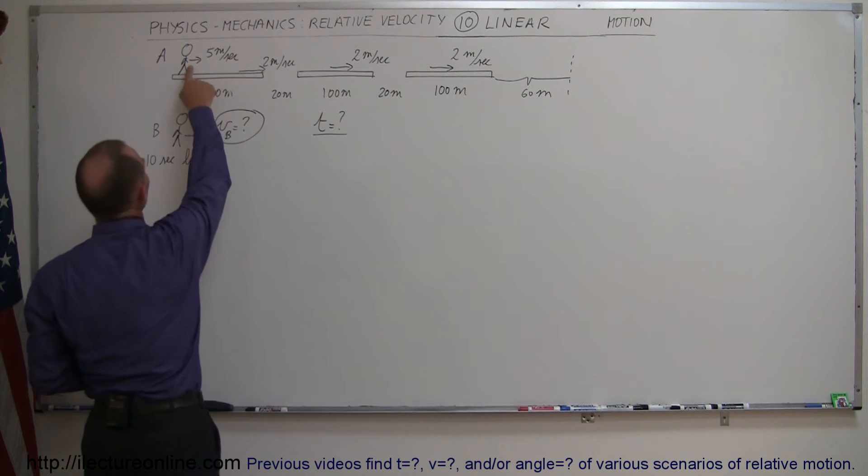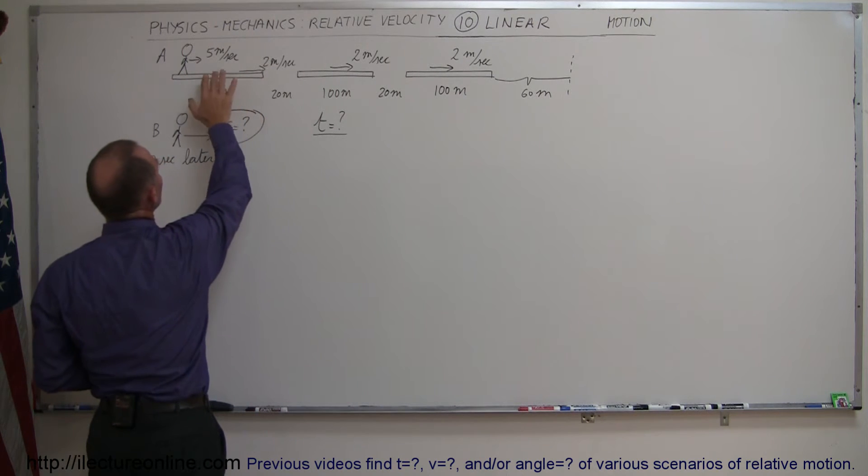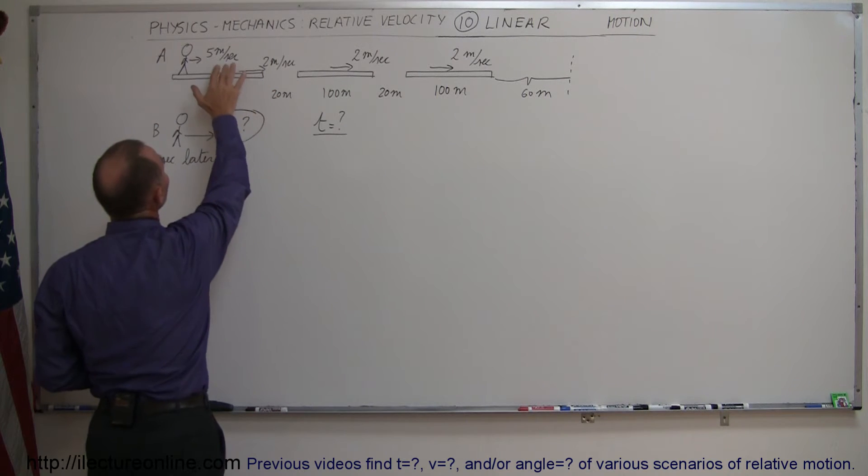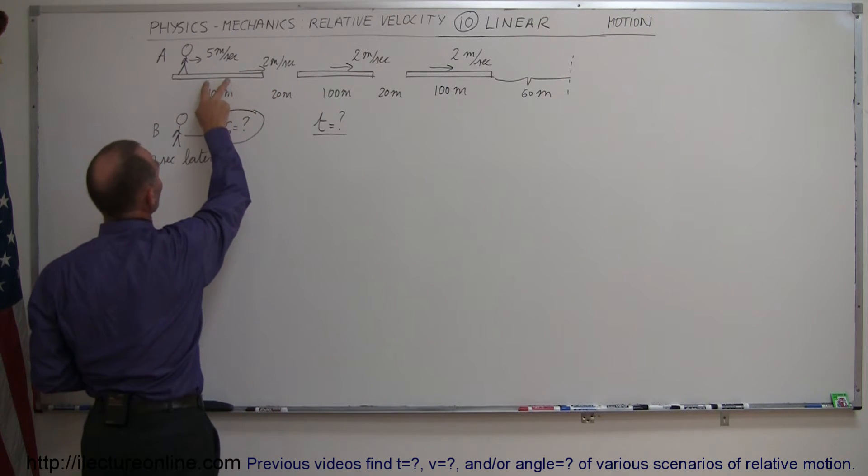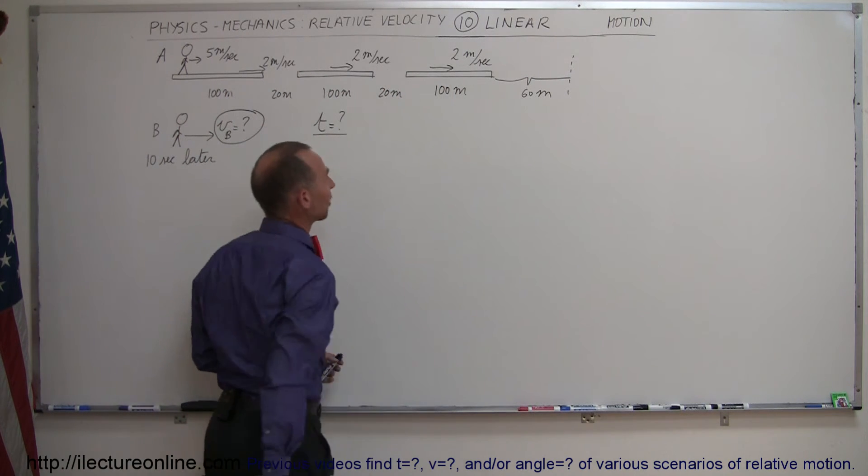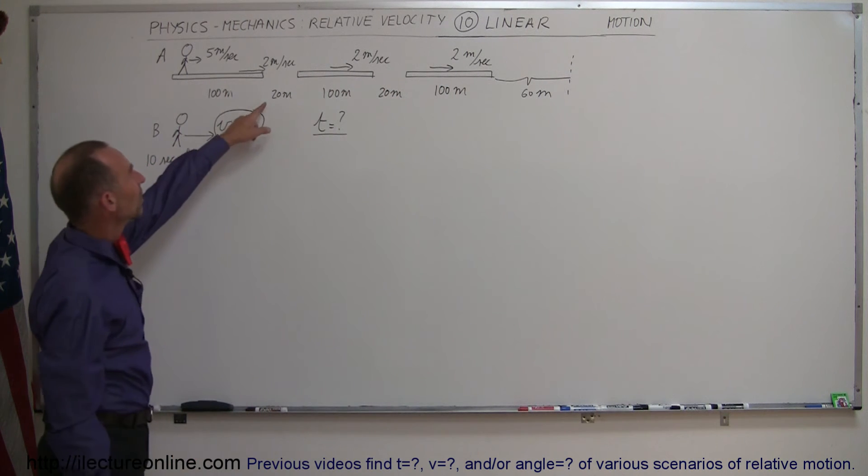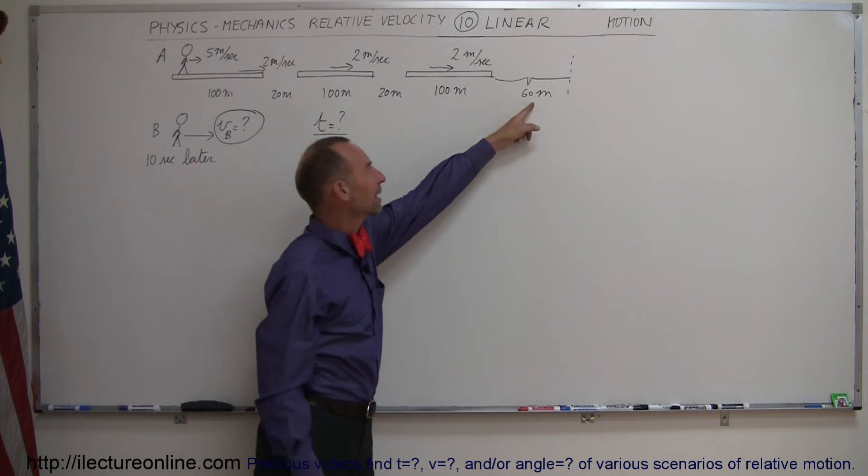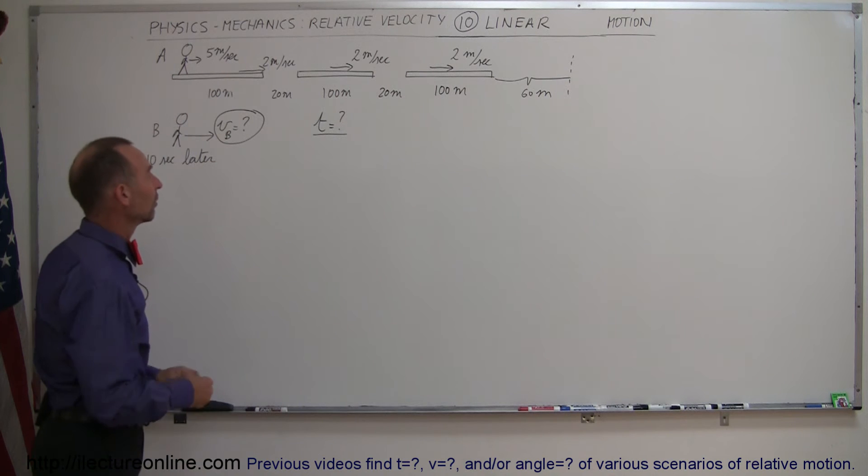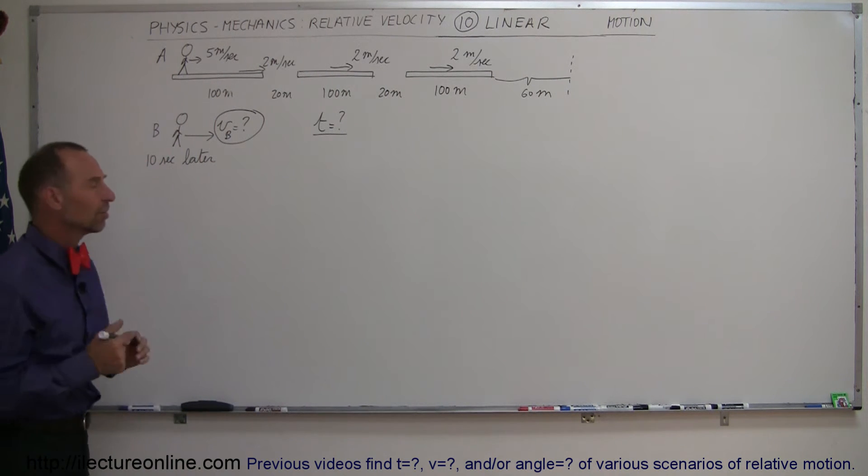When the passenger A is on the conveyor belt, the relative speed of A relative to the hallway will be 7 meters per second, so he'll be traveling 7 meters per second here, 7 meters per second there, and 7 meters per second there. And then when he's in between and at the very end here, he's only traveling at 5 meters per second because he doesn't have the advantage of the moving belt. So we can snip it into two pieces.